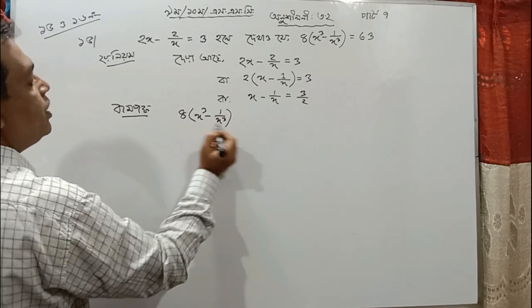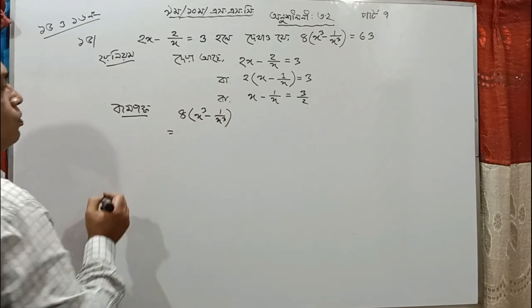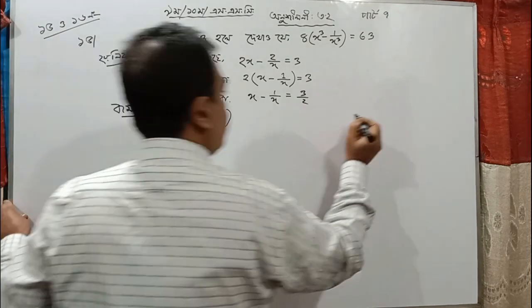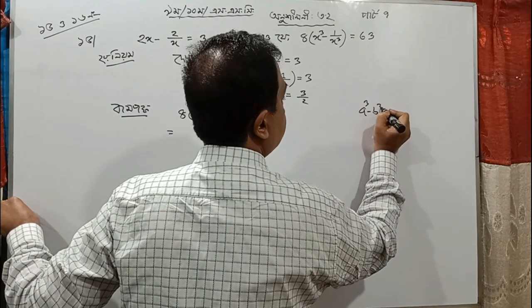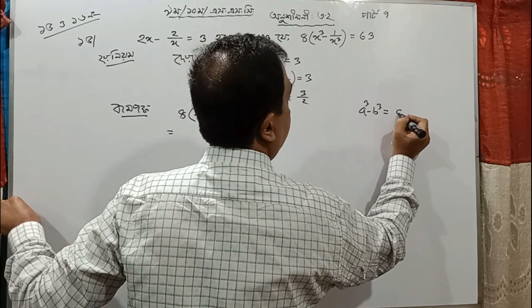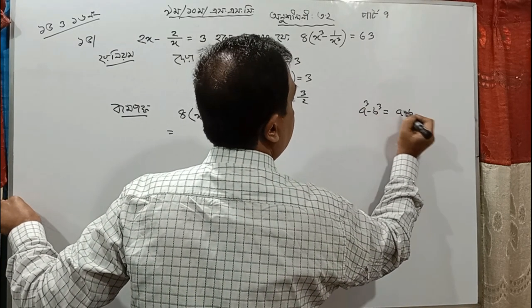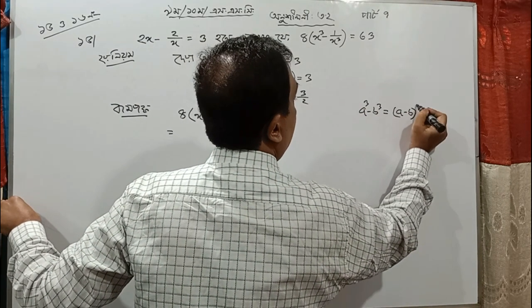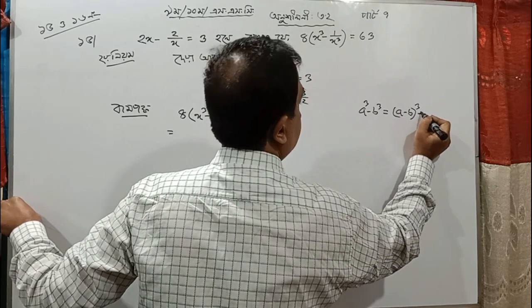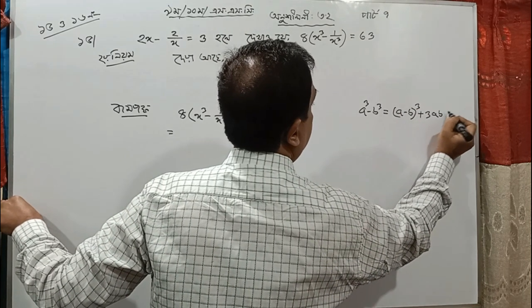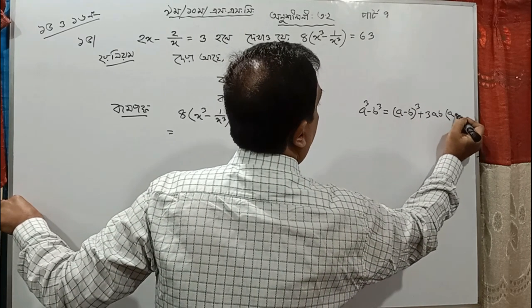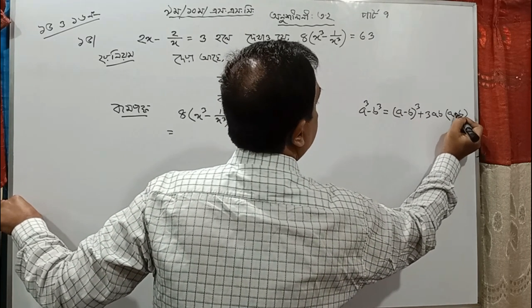So a³ minus b³ is 0, so a³ minus b³, and this is a³ minus b³, and this is plus 3ab into a minus b.